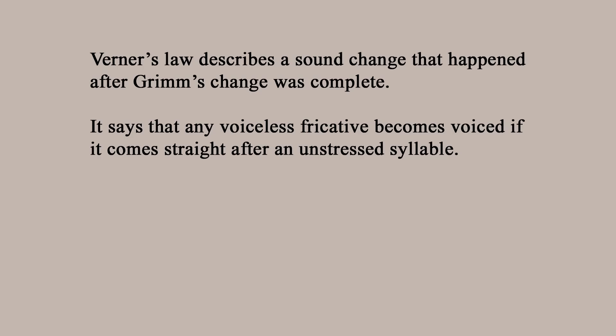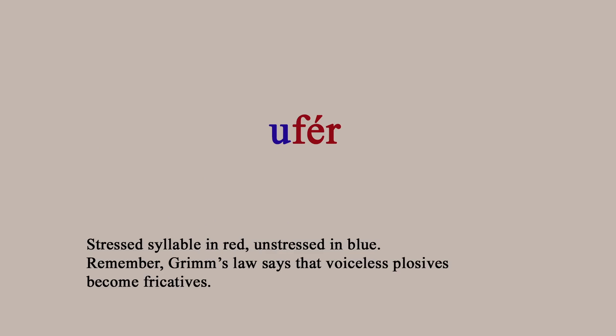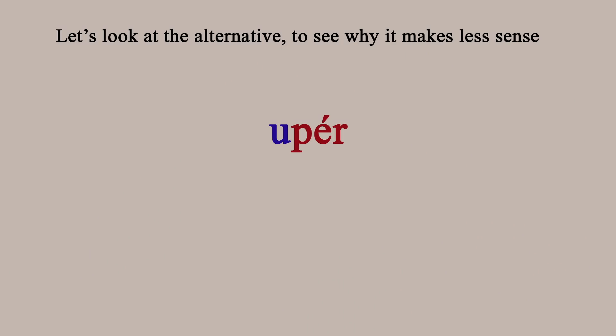Werner's Law says that wherever a voiceless fricative like F, TH, or CH has an unstressed syllable before it, it becomes voiced. To give an example: Proto-Indo-European 'UBER', when affected by Grimm's Law, becomes 'UFER'. Because the voiceless fricative F has an unstressed syllable before it, Werner's Law takes place and it becomes voiced. This is the word that becomes 'over' in English. So Werner's Law accounts for a lot of the exceptions to Grimm's Law in a really succinct way, but it relies on there being unstressed first syllables of word roots in some words.